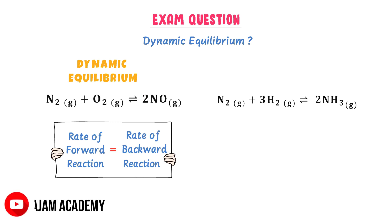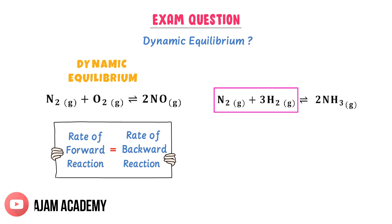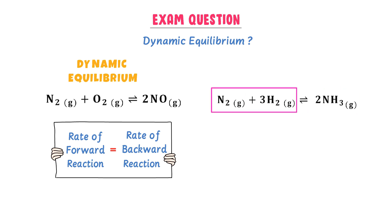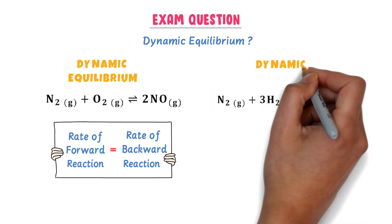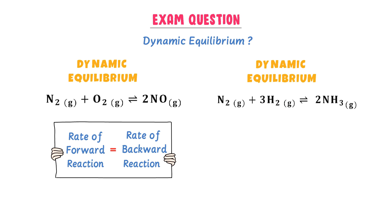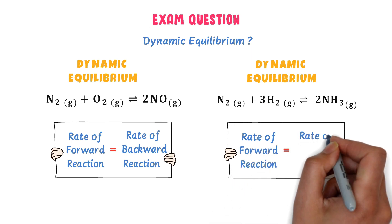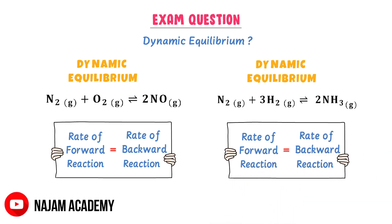Secondly, in this chemical reaction, one mole of nitrogen gas plus three moles of hydrogen gas react together to form two moles of ammonia gas, NH₃. At the same time, two moles of ammonia NH₃ gas break down to form one mole of nitrogen gas plus three moles of hydrogen gas. When we say this chemical reaction is in chemical equilibrium or dynamic equilibrium, it means that the rate of forward reaction is equal to the rate of backward reaction — the rate at which nitrogen gas plus hydrogen gas react together is equal to the rate at which ammonia breaks down to nitrogen gas plus hydrogen gas.